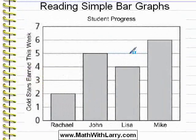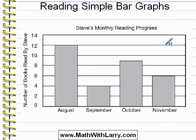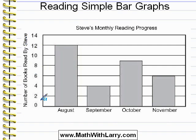Let's now take a look at another example. This example is a tiny bit different. Let's take a look at the title: Steve's Monthly Reading Progress. That gives us an idea of what the chart will be showing us. Along the vertical axis, it says number of books read by Steve. Here we can see that we're counting by twos — each line is representing two books and not one. That's okay as long as we remember that each line does represent two and not one. Very often you'll see something like that. Now along the horizontal axis, we have four different months of the year, so we'll see how many books he read in each of these four months.